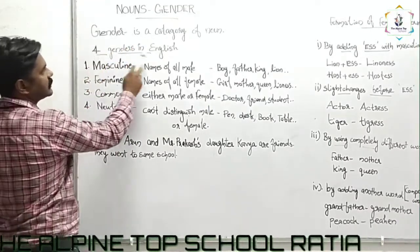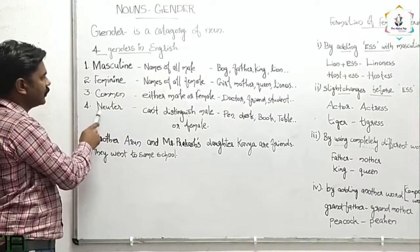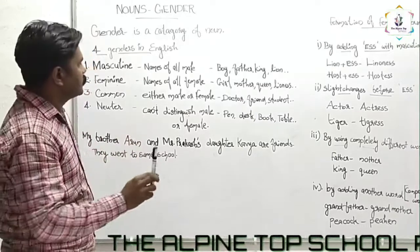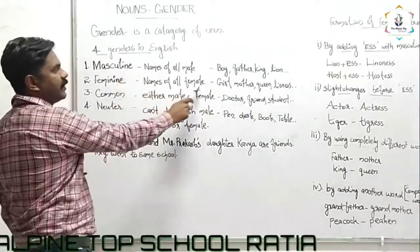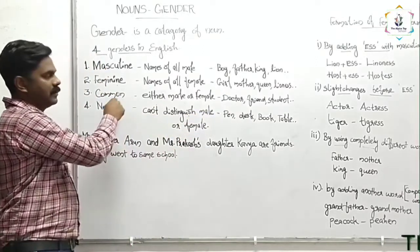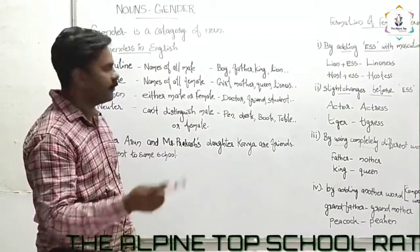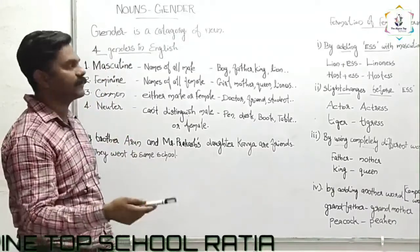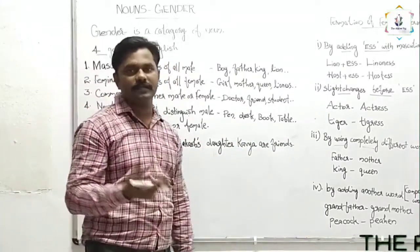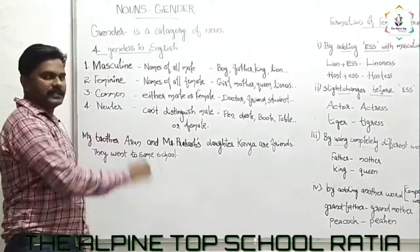So four types of genders are there. First is masculine gender, second is feminine gender, third is common gender, and fourth is neuter gender. Male names — masculine. Female names — feminine. Either male or female — common gender. Neither male nor female, like non-living things such as pen, desk, book — neuter gender.